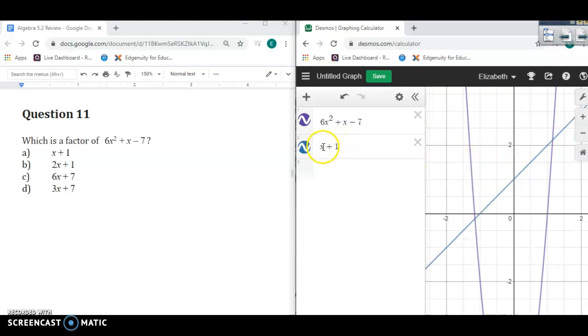Letter B. If I change that to 2x plus 1, it still does not go through this point or this point.